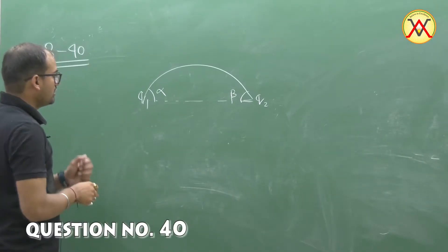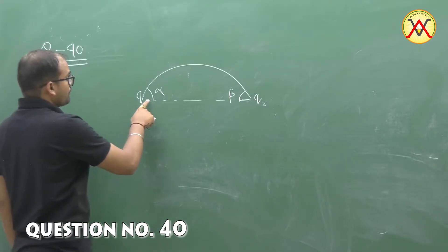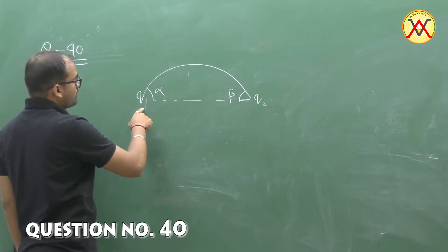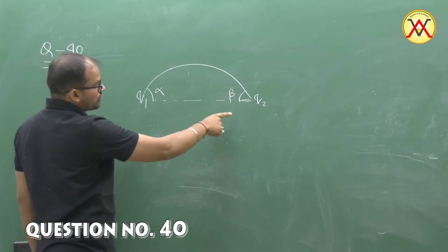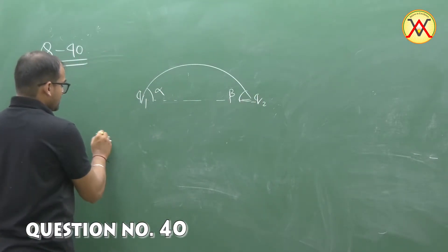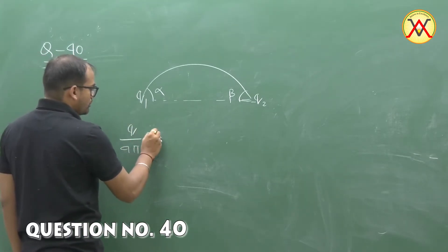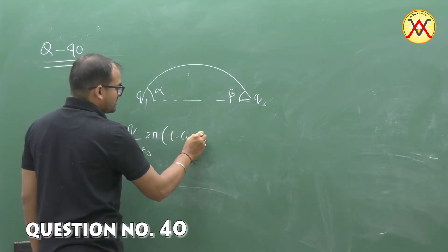In this question we have given that the flux going from Q1 is linking to minus Q2. That means Q1 by 4 pi epsilon naught into 2 pi 1 minus cos alpha.